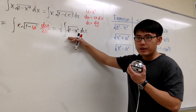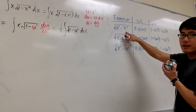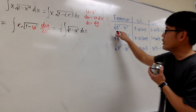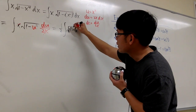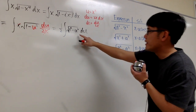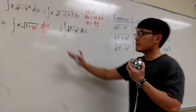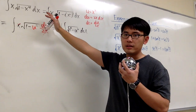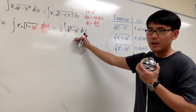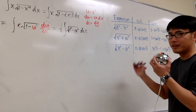Now this integral right here — we can use the first situation to help us out. Because we have 1 squared, that's the same as a squared, and u squared is the same as x squared. The idea is: we started in the x-world, took it to the u-world, and now we have to take this into the theta world.